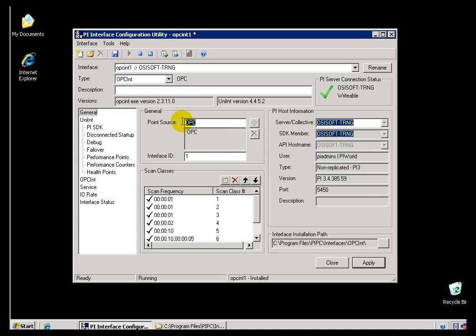Back in ICU, of course, Point Source is here. ID is right here. That's where you would specify the Interface ID.